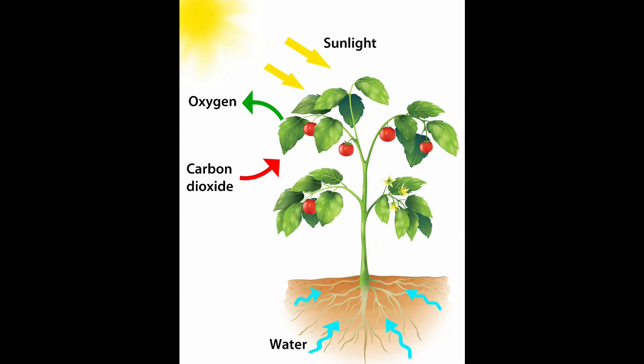Dear children, hope so ab aapko biotic environment ka jo first component hai — producers — plants — yeh clear ho gaya hoga. Green plants which prepare their own food are called producers. Inko autotrophs bhi kehte hain kyunki yeh apna food khud banate hain. Energy kahan se lete hain? Sun se. It is very clear from the diagram also. Ab agar plants ne food prepare kar liya, producers ne produce kar liya food.